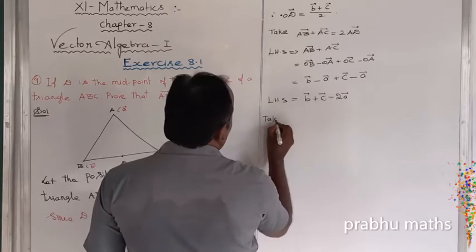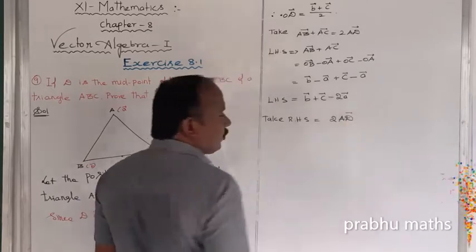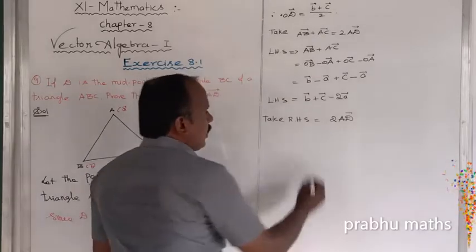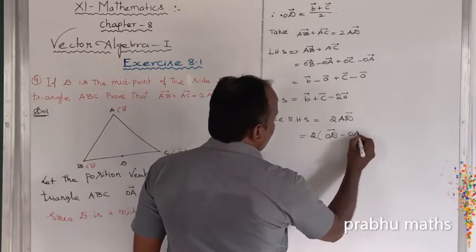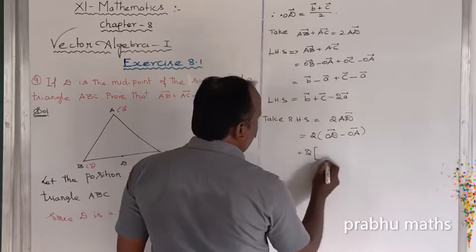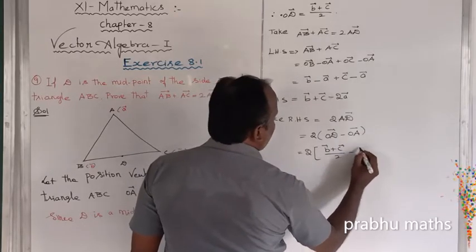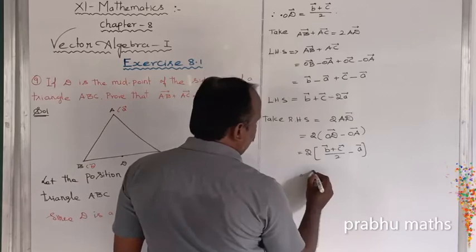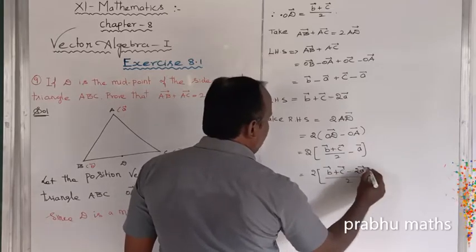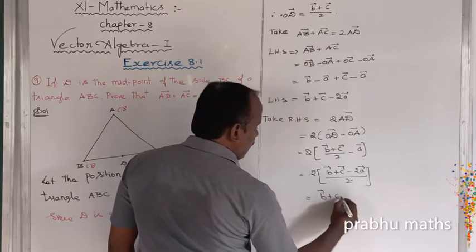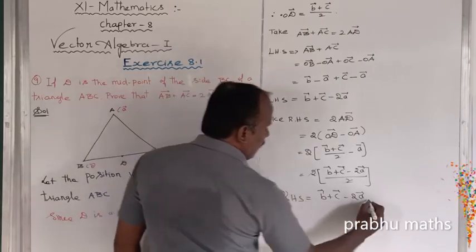Now let us check RHS. RHS equals 2AD vector. AD vector equals OD vector minus OA vector. So RHS equals 2 times of (B vector plus C vector divided by 2 minus A vector), which equals 2 times of (B vector plus C vector minus 2A vector) divided by 2. The 2 cancels, giving B vector plus C vector minus 2A vector. This is RHS — equation 2.